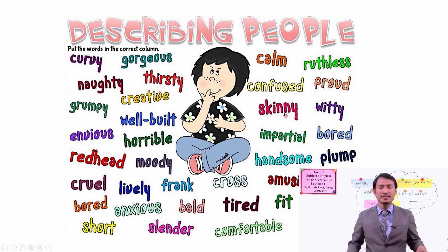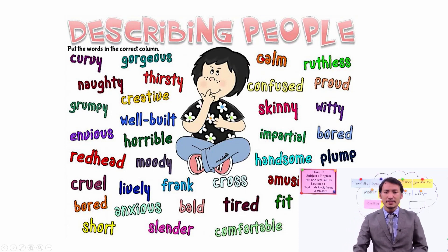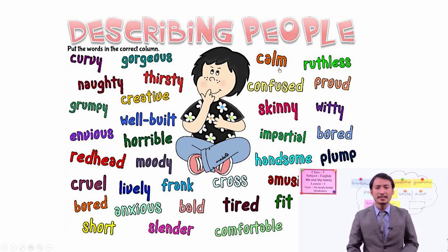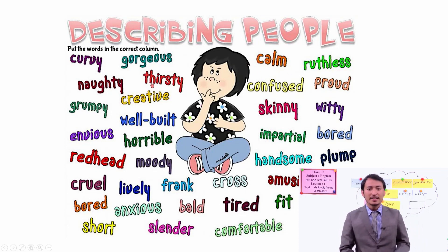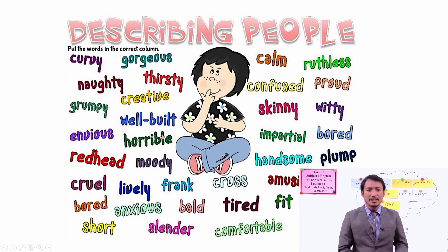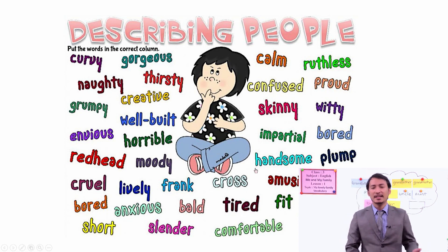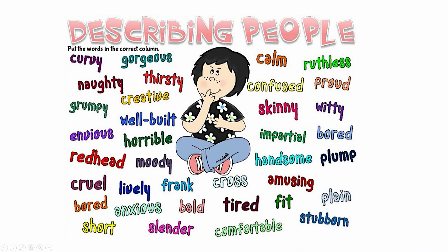There are different words to describe. You can read some of them. Maybe you can understand — calm, thirsty, naughty, horrible, moody, handsome, bored, confused. These are some describing words in English.